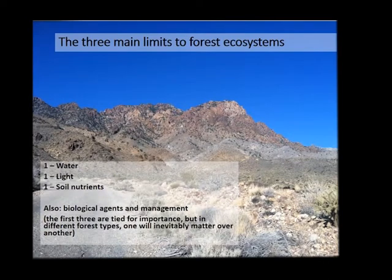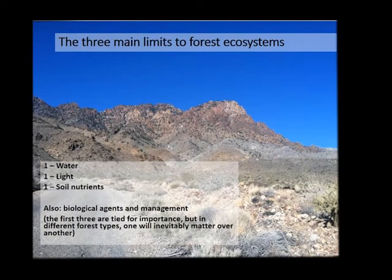Right off the bat, I want to acknowledge that forests — and this is true of pretty much most or maybe all plant communities — are limited by three things: water, light, and nutrients. What's going to happen in the course of looking at different forest types across the world and across California, we're going to find that these three factors come up again and again in virtually every context in which we discuss forests.